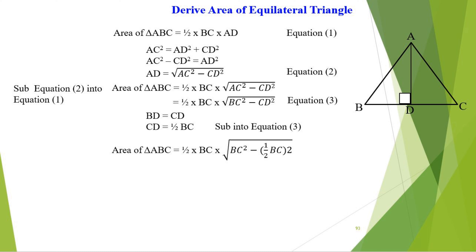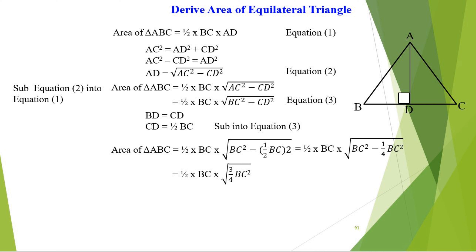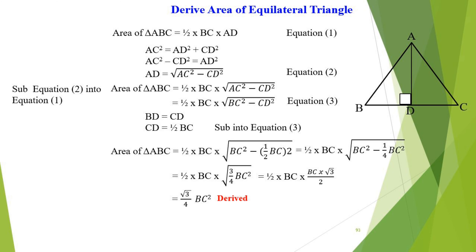we get the area of triangle ABC equals half times BC times the square root of BC squared minus (half times BC) squared. Opening up the bracket, we get half times BC times the square root of BC squared minus one quarter BC squared, which equals half times BC times the square root of three quarters BC squared. Taking the square root gives half times BC times BC times square root 3 divided by 2. As a result, we get square root 3 divided by 4 times BC squared. This is the area of the equilateral triangle formula.